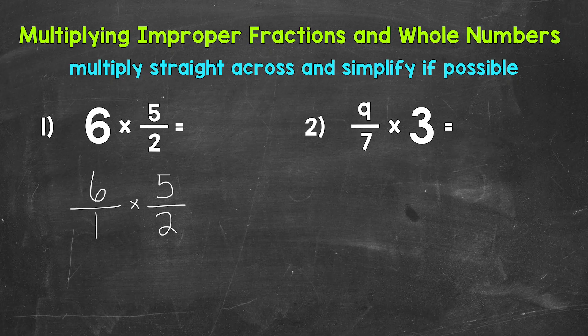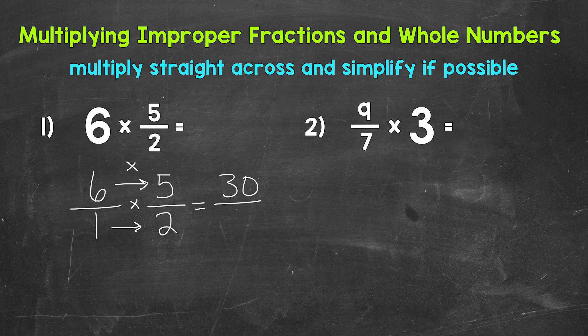We can rewrite any whole number in fractional form by putting it over 1. We're not changing the value of that 6. That fraction 6 over 1 still has a value of 6. Now we can multiply straight across. Let's start with the numerators: 6 times 5 is 30. Now for the denominators: 1 times 2 is 2. So we end up with 30 halves, 30 over 2.